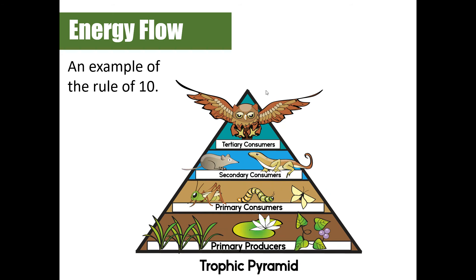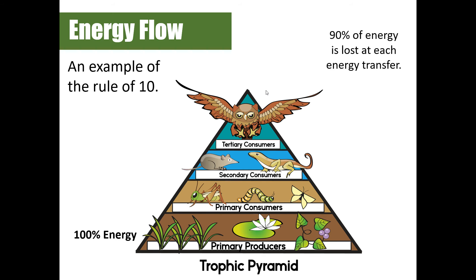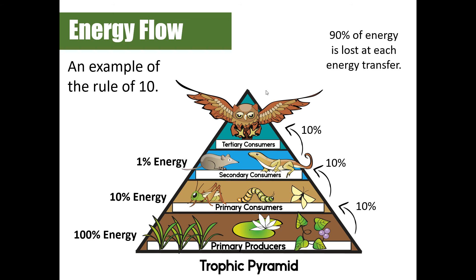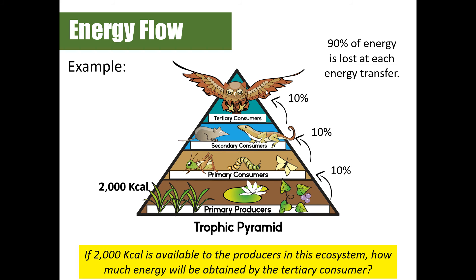The available energy decreases as you move up the pyramid. Tertiary consumers always receive the least amount of energy and are fewest in number in a healthy ecosystem. The Rule of 10 says that 10 percent of energy moves from one trophic level to the next, and 90 percent is lost at each energy transfer. So producers have 100 percent of the energy available. Primary consumers receive 10 percent, secondary consumers receive only 1 percent, and tertiary consumers receive just 0.1 percent of the energy originally available at the producer level.